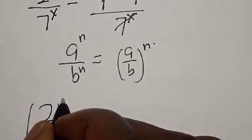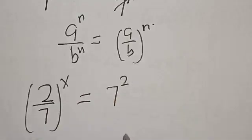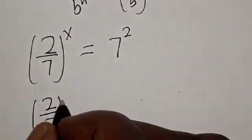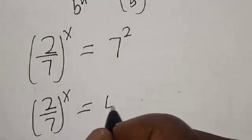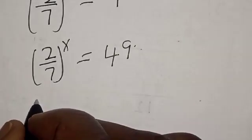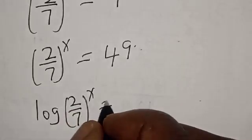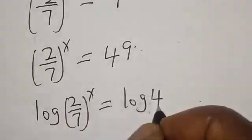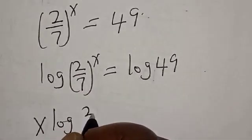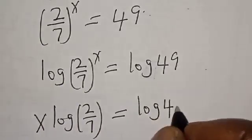So we have 2 over 7 raised to power s is equal to 7 squared, that is 49. Now let's take the log of both sides: log of 2 over 7 raised to power s is equal to log 49, which gives us s times log of 2 over 7 is equal to log 49.